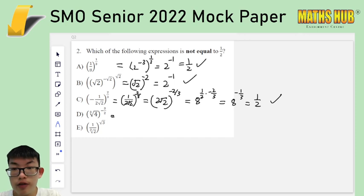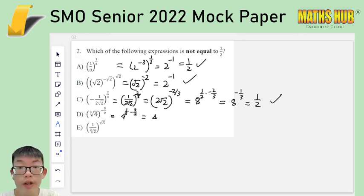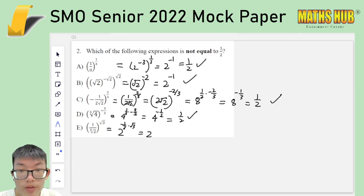For D, 4 cubed root of 1 third is 4 to the power of 1 third. And then you multiply by negative 3 halves. And so this would be 4 to the power of negative 1 half. And this is also equal to half. So you know that the last one is probably not going to be equal to half, but let's check. So this would be 2 to the power of negative 1 third times square root 3. This is 2 to the negative 1 over root 3, which is certainly not equal to the rest of these. So it is not equal to half. And that is our answer.